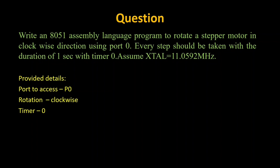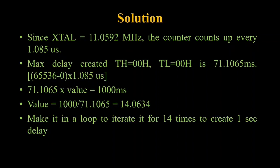Here we are going to bring in the concept of the timer. The port to be accessed is P0, it should rotate clockwise, and we need to enable Timer 0. The duration required is 1 second. From timer programming, we know the crystal oscillator frequency is 11.0592 MHz. Dividing 1 by this value gives approximately 1.085 microseconds as the time period. If we activate Timer 0 with the minimum value of 0x0000,